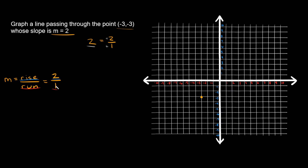The rise is 2 and the run is 1, so we go up 2 and then over 1. Starting from (-3, -3), we go up 2 and then over 1 to find another point on the line. Now that we have two points, we draw a straight line between them. This line passes through (-3, -3) and has a slope of 2 — or 2 over 1, up 2 over 1.